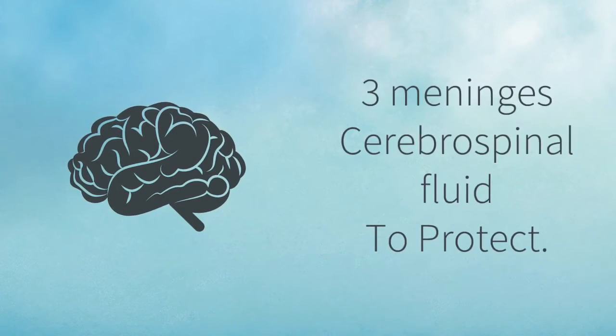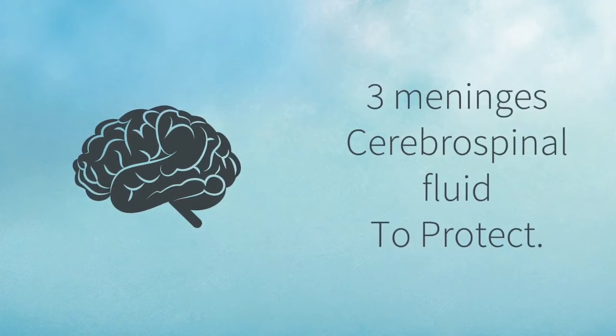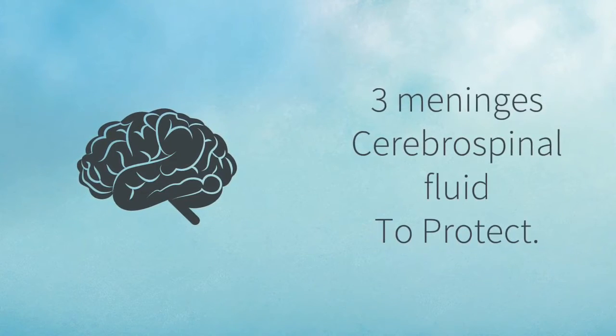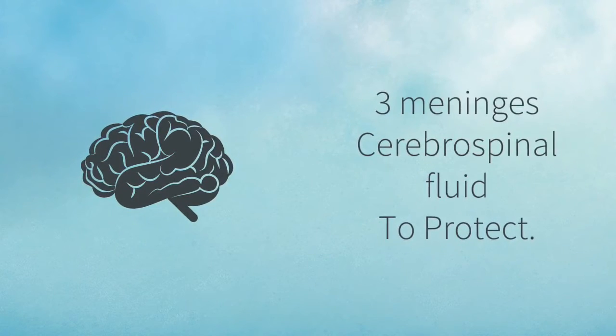Your brain is protected by three membranes, and they are known as the meninges, and in between each of these membranes is cerebrospinal fluid.